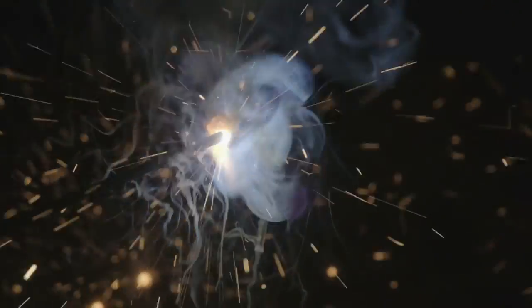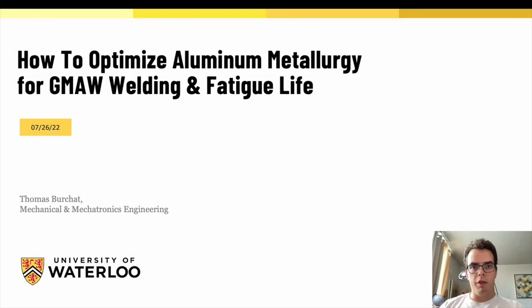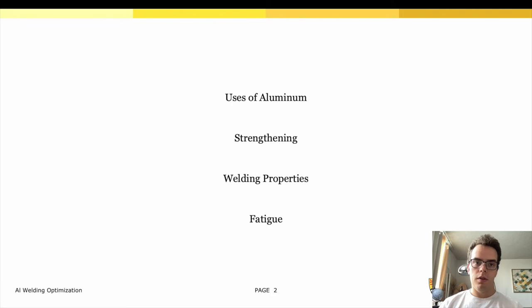One such method is the novel use of newer and lighter alloys such as strengthened aluminum alloys. The joining of said alloys is a challenge we'll discuss today, and with the demand set we'll be discussing at a high level how to optimize aluminum metallurgy for GMAW welding and fatigue life.